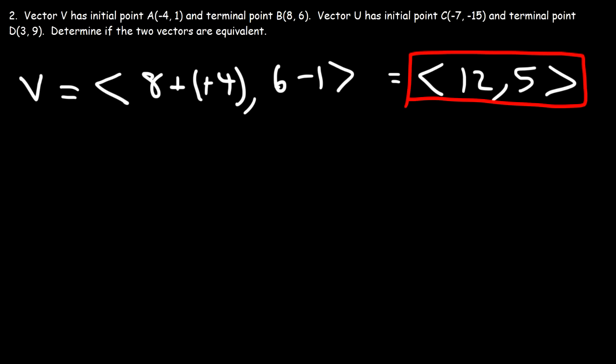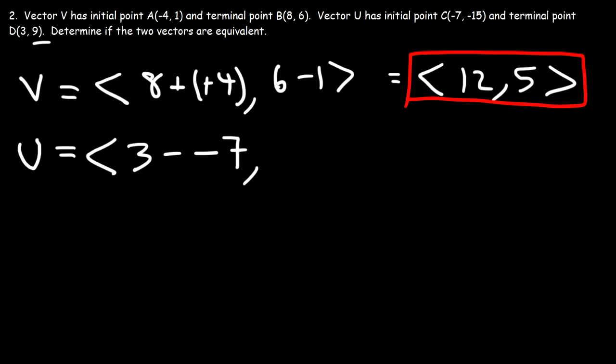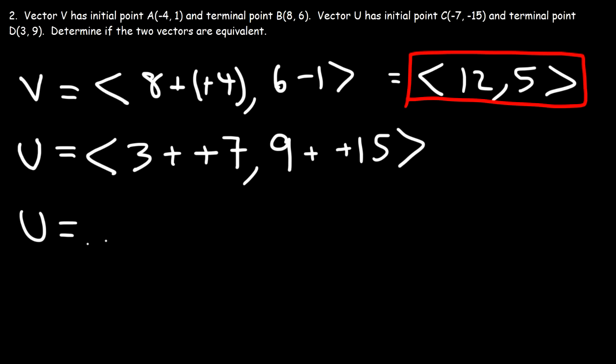For vector U (also called vector CD): Ux = 3 − (−7) = 10, Uy = 9 − (−15) = 24. So the component form of vector U is ⟨10, 24⟩.